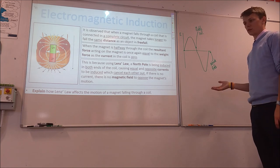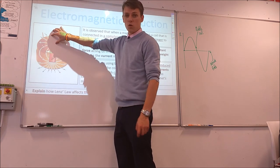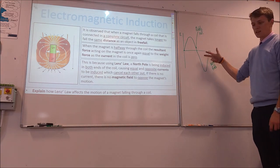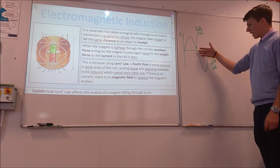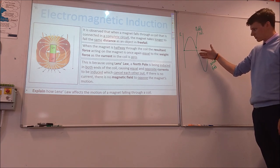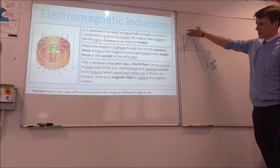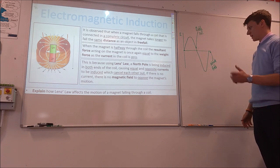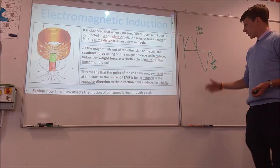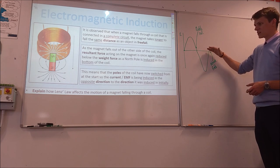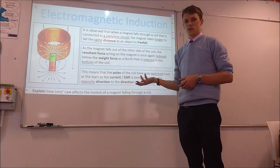As the magnet passes the middle, the north pole end is now dominant at the bottom of the coil, so the induced polarity reverses — the current and EMF in the coil flip direction, which is why the graph goes negative. The magnet is still accelerating, so the EMF magnitude grows again, and this negative peak is actually bigger than the first positive peak because the magnet is now travelling faster. Then as the magnet starts to leave the coil, fewer flux lines cut through it, the rate of change of flux linkage decreases, and the EMF reduces back to zero once the magnet is completely outside.